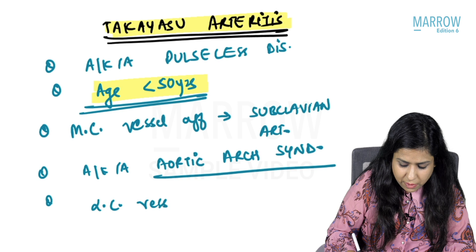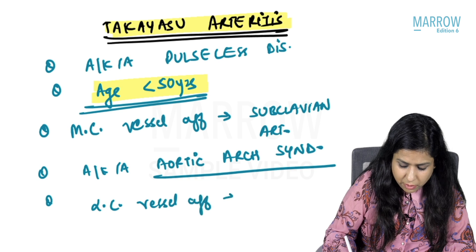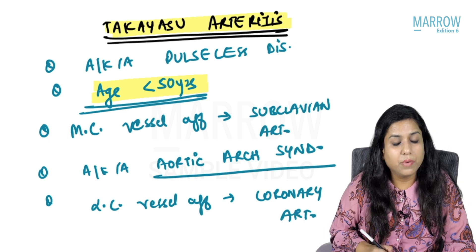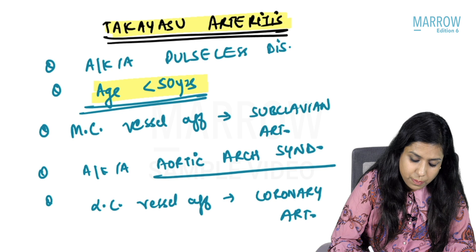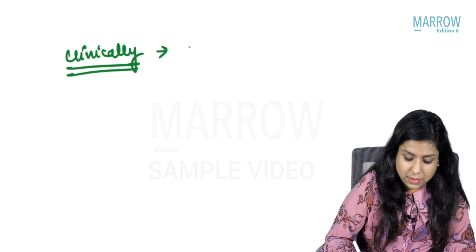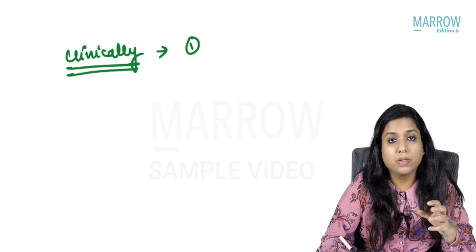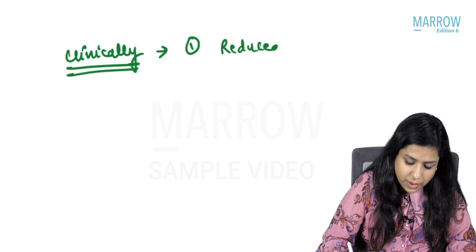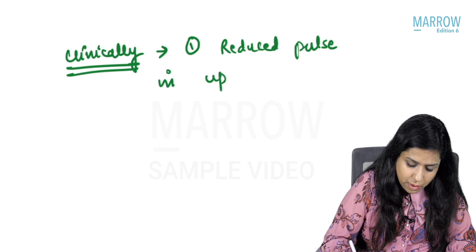The least common vessel affected in Takayasu arteritis is the coronary artery. Clinically, the patient presents with reduced pulse in the upper extremities.